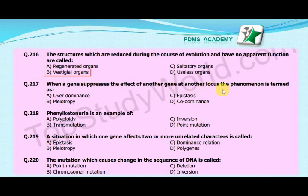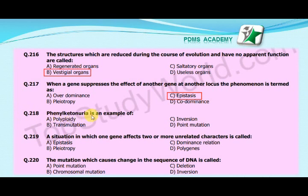Our next MCQ is: When a gene suppresses the effect of another gene at another locus, the phenomenon is termed as — A. Over dominance, B. Pleiotropy, C. Epistasis, D. Co-dominance. The correct answer is C. Epistasis.